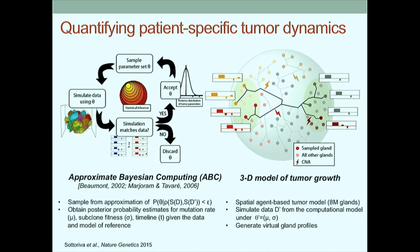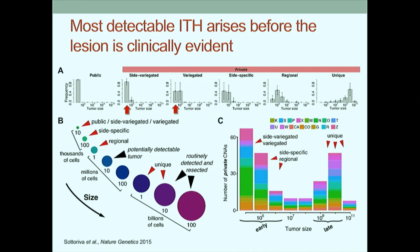When we apply this framework to our dataset, congruent with the predictions of the Big Bang model, public alterations occur very early - on the order of 10^4 cells - as expected since they were present in the founding tumor cell. But the majority of private alterations, including side-variegated and variegated events, also happen very early, on the order of 10^4 to 10^5 cells - orders of magnitude before we potentially detect or routinely resect the tumor. Early events dominate the landscape of late-stage sampled tumors. We're looking at an echo of the primordial cancer when we sample later stage tumors.